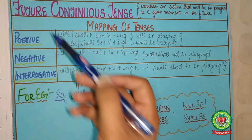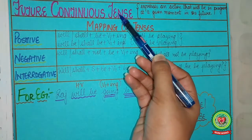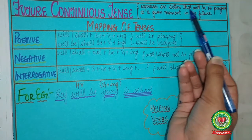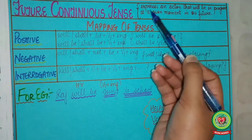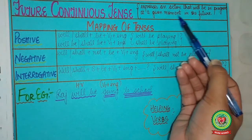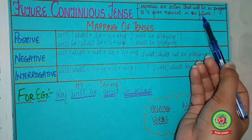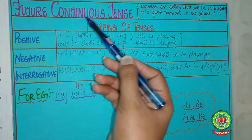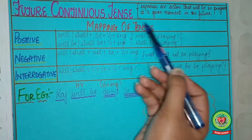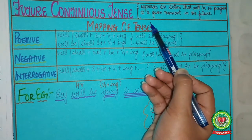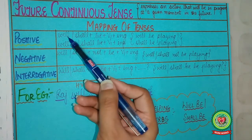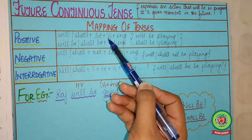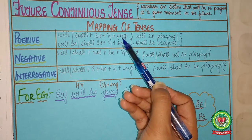Future continuous tense expresses an action that will be in progress at a given moment in the future. Now, let us see the rule of future continuous tense from the mapping. The rule is: will/shall plus be plus present form of verb plus ing.